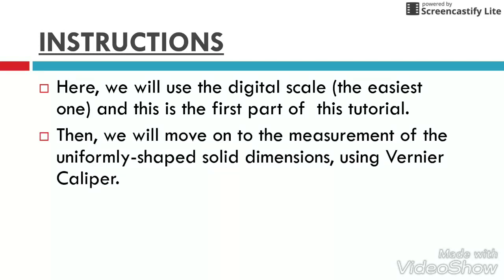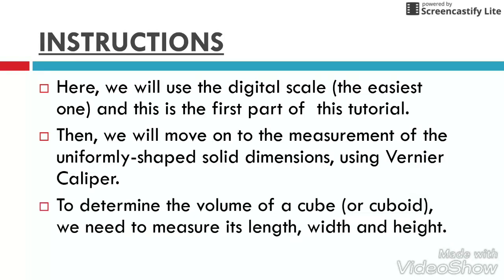Then we will move on to the measurement of the uniformly shaped solid dimensions using a Vernier caliper. To determine the volume of a cube or cuboid, we need to measure its length, width, and height, since volume equals length times width times height.